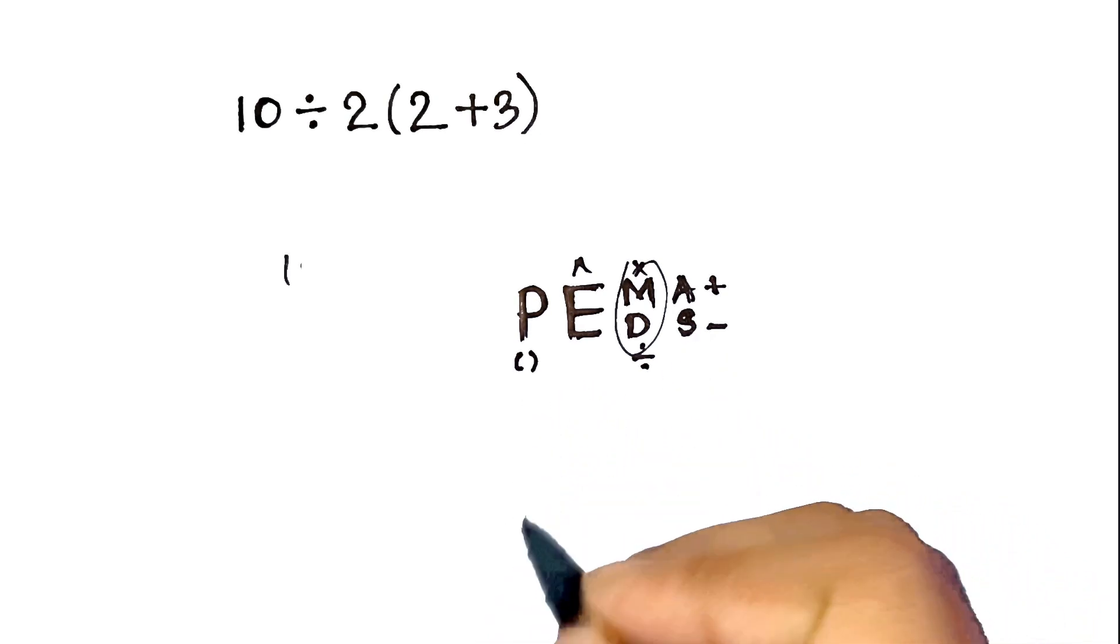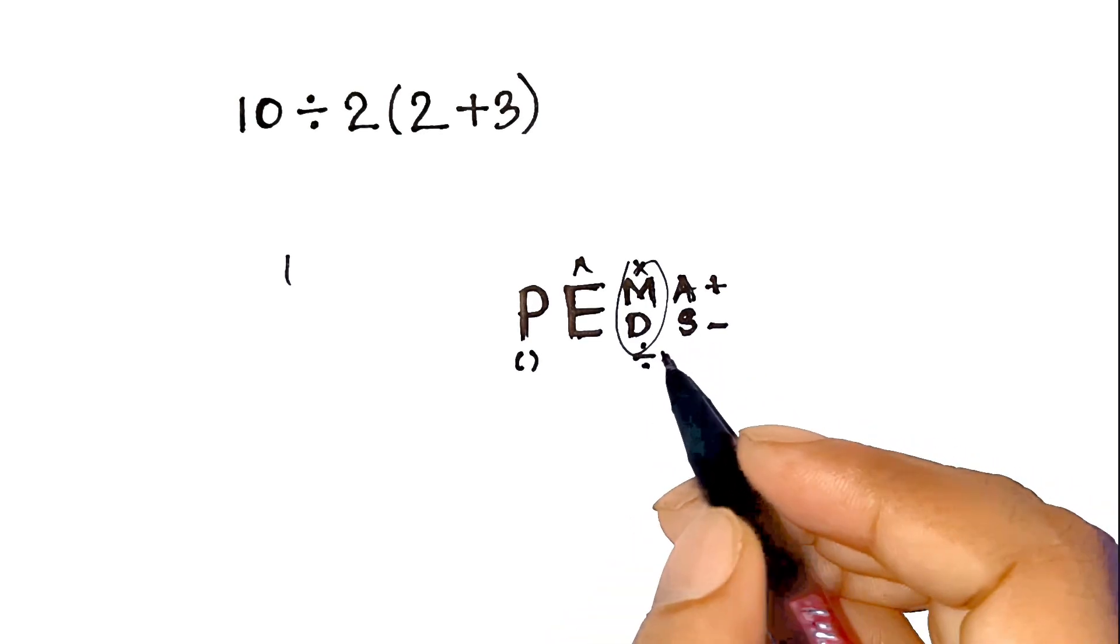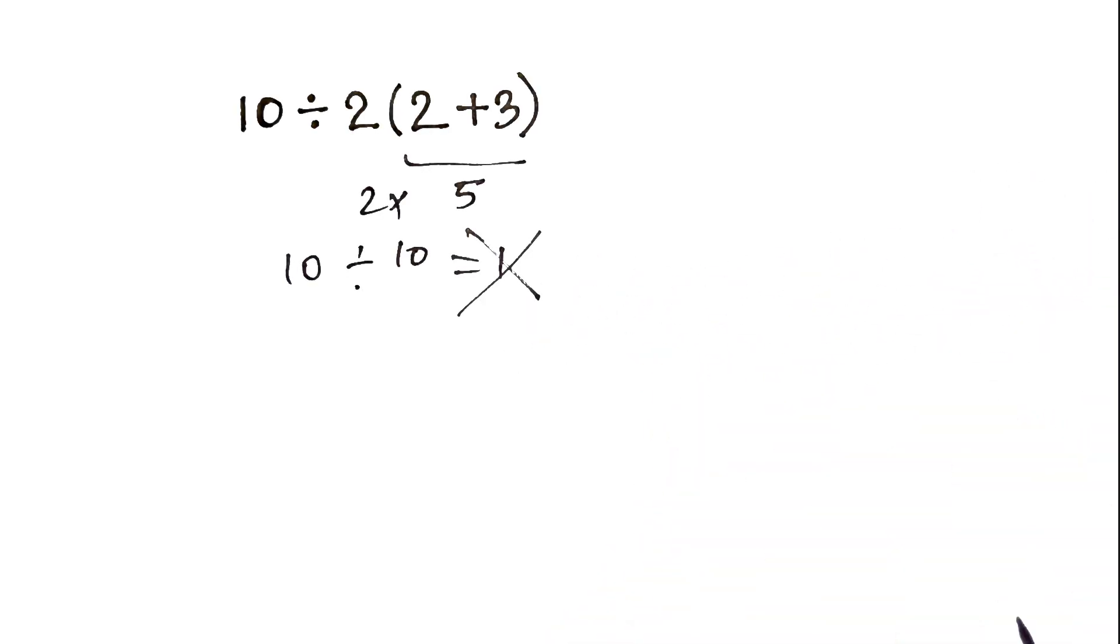But here's the catch. Multiplication and division actually have equal priority. You don't always do multiplication first. You work from left to right.